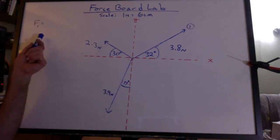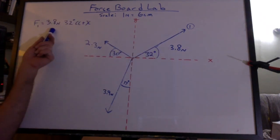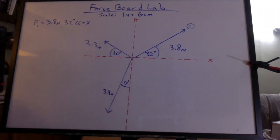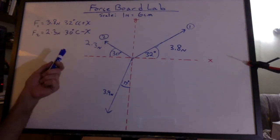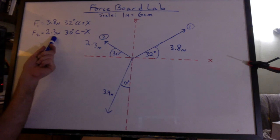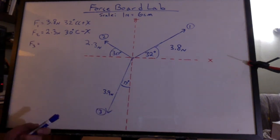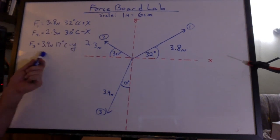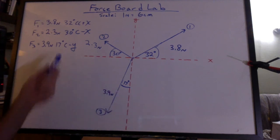Now I'm going to list the three force vectors. Force vector one, 3.8 newtons, 32 degrees counterclockwise from the positive x-axis. Force vector number two, that's going to be 2.3 newtons, 30 degrees clockwise from the negative x. And force vector number three, 3.9 newtons, 17 degrees clockwise from the negative y.